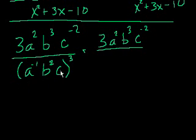So this bottom part we can re-simplify as 3a squared b to the third c to the minus 2. All of that is a to the negative 1 b squared c to the third power. That's each of these items to the third power. So a to the minus 1 to the third power, you can multiply the exponents. So that becomes a to the minus 3. b squared to the third power, that's b to the sixth power. And then finally, c to the first to the third power, so that's c to the third.